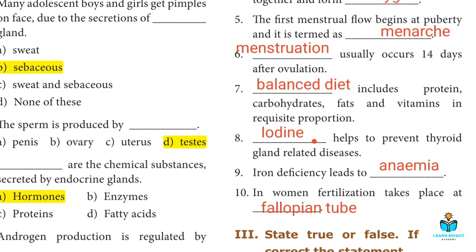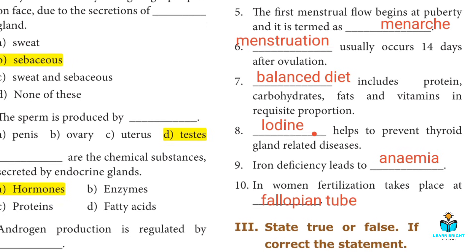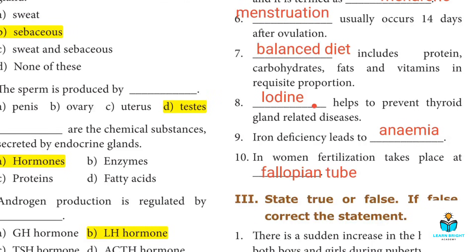Eighth: This helps to prevent thyroid gland related diseases. Answer: Iodine. Ninth: Iron deficiency leads to? Answer: Anaemia.